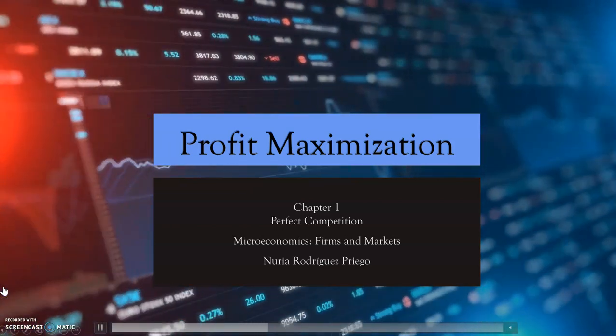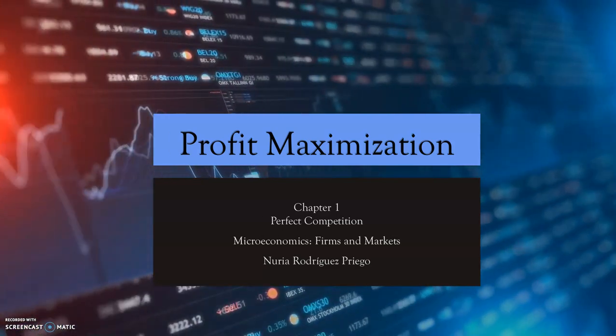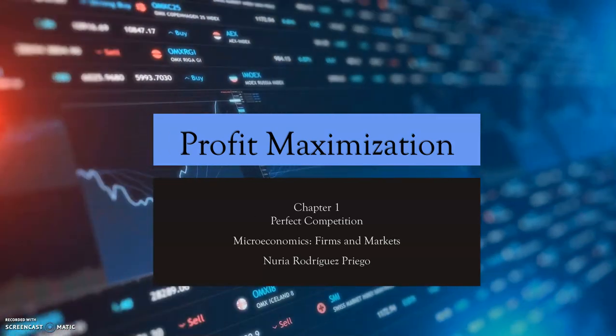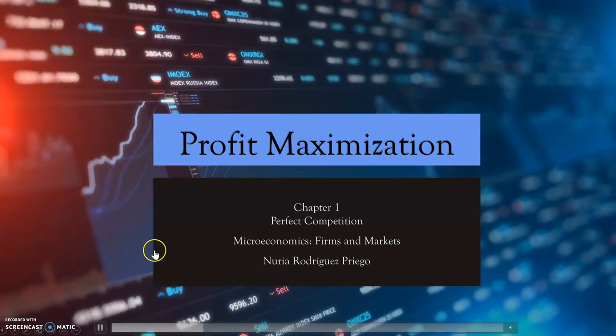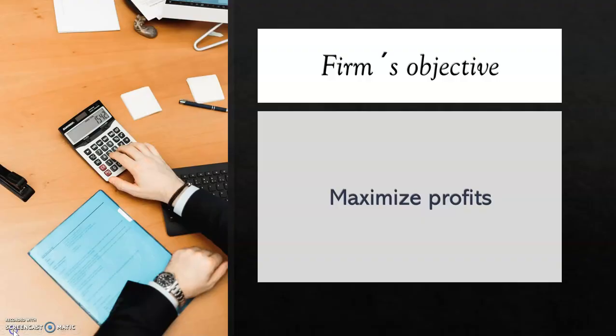Hi, this is the first video of chapter 1 on perfect competition. In this video we will talk about profit maximization. The objective of the firm is to maximize its profits, and this assumption is frequently used in microeconomics because it predicts business behavior reasonably accurately.